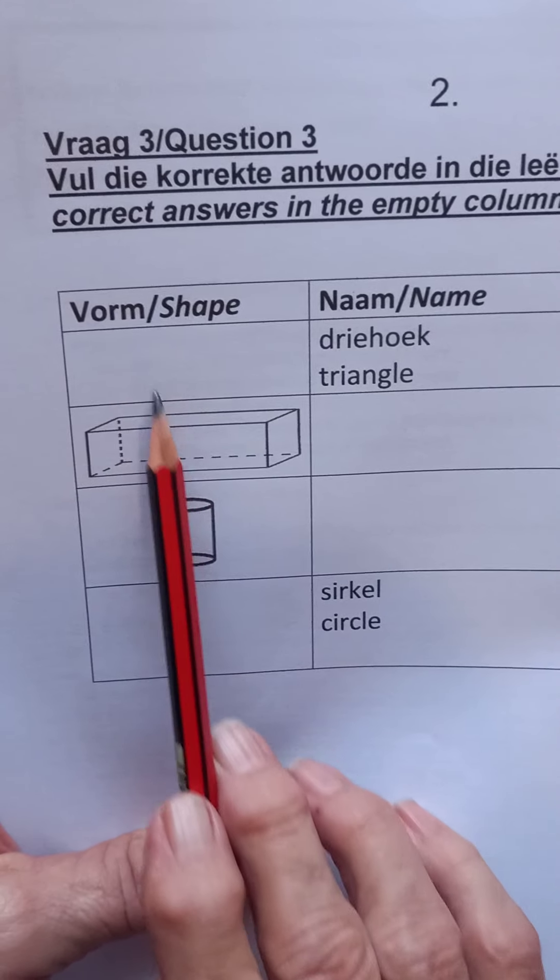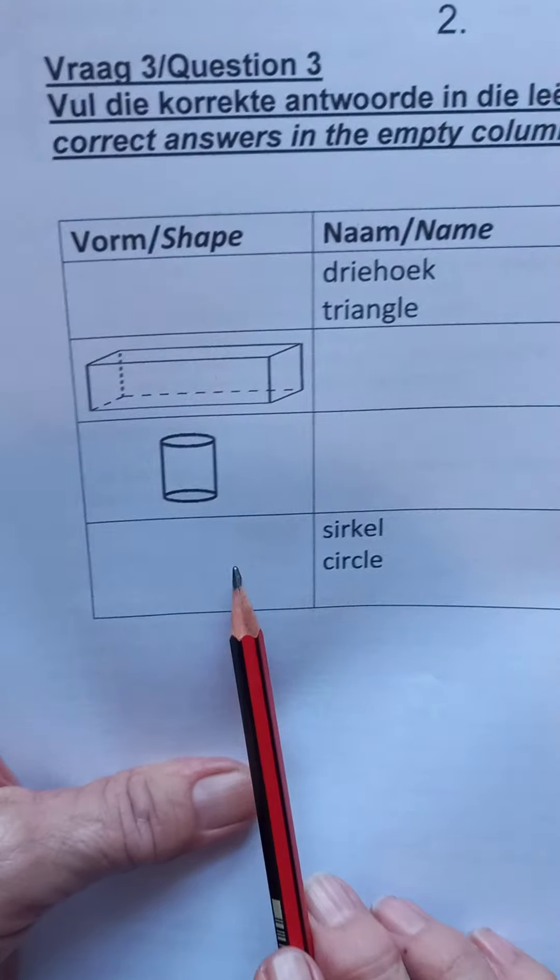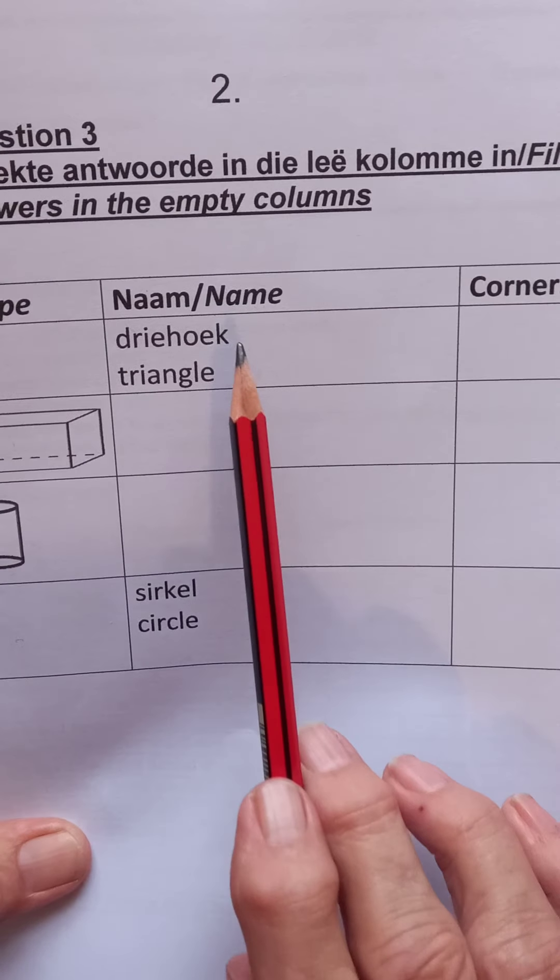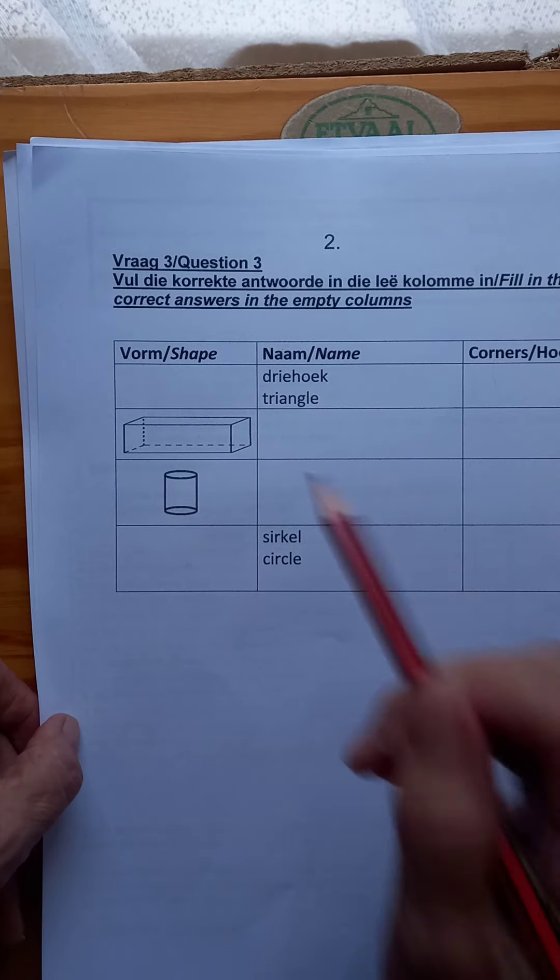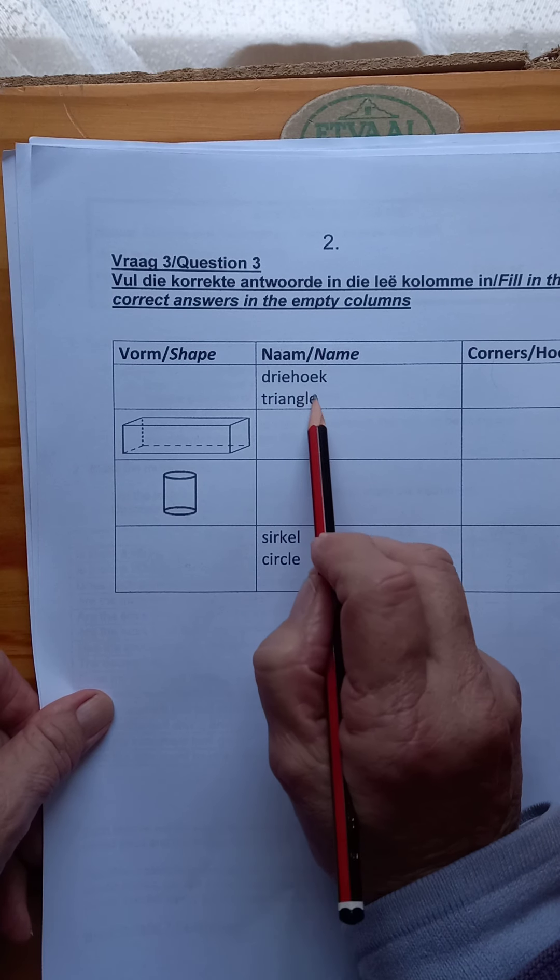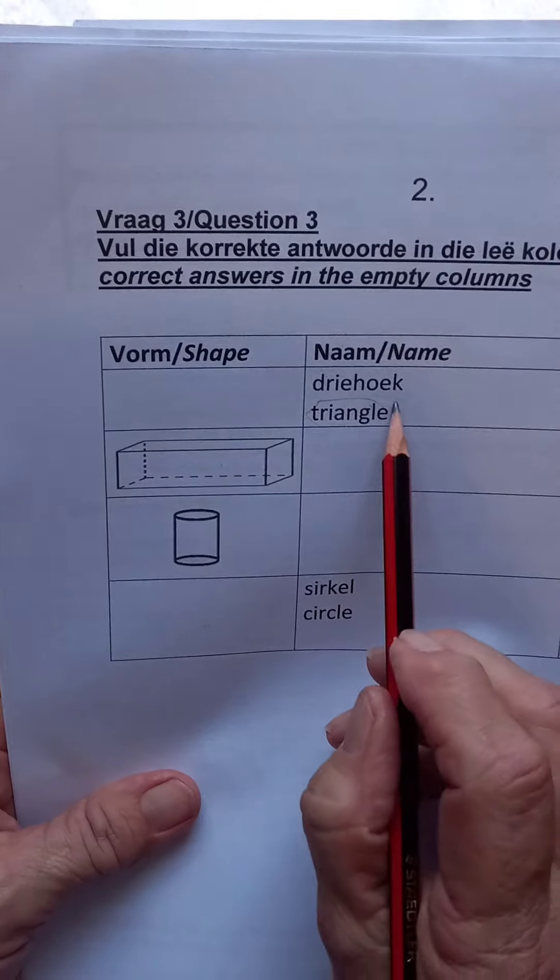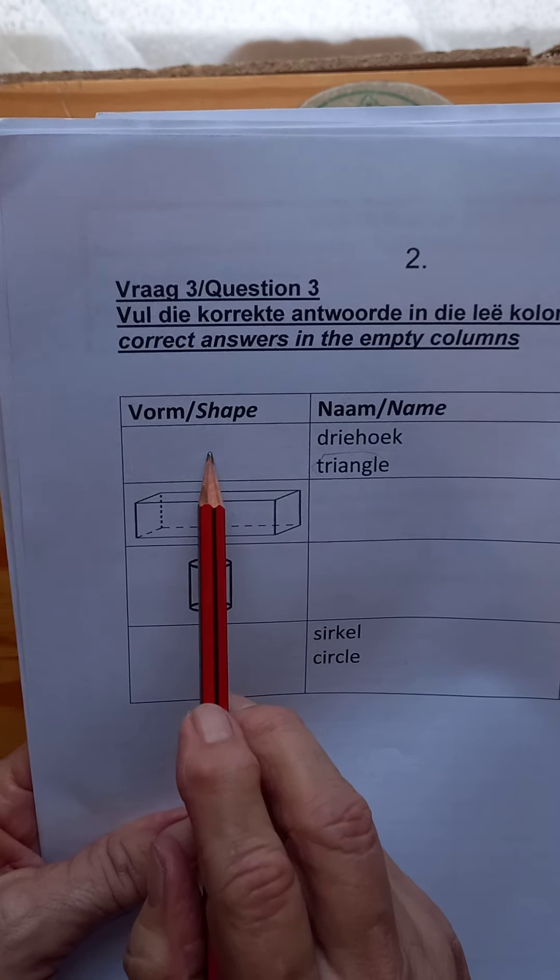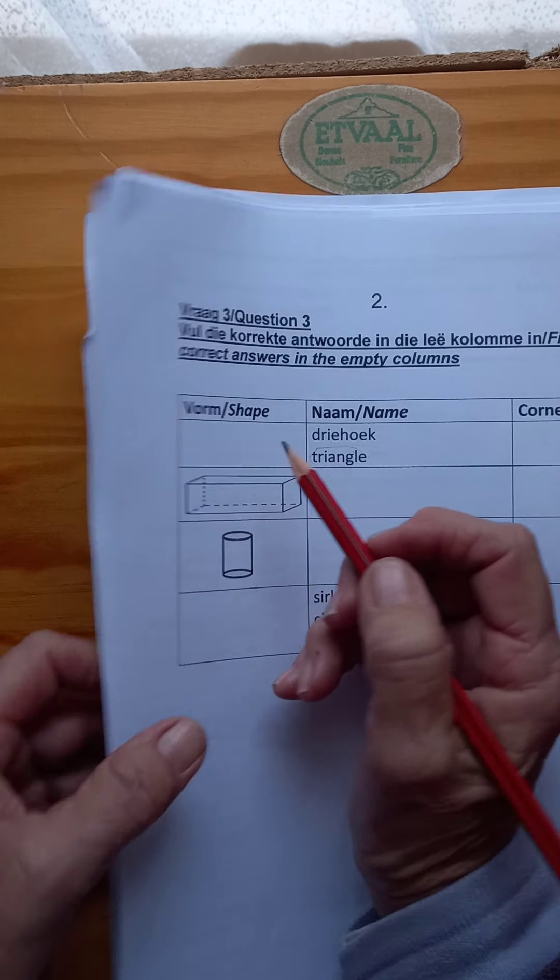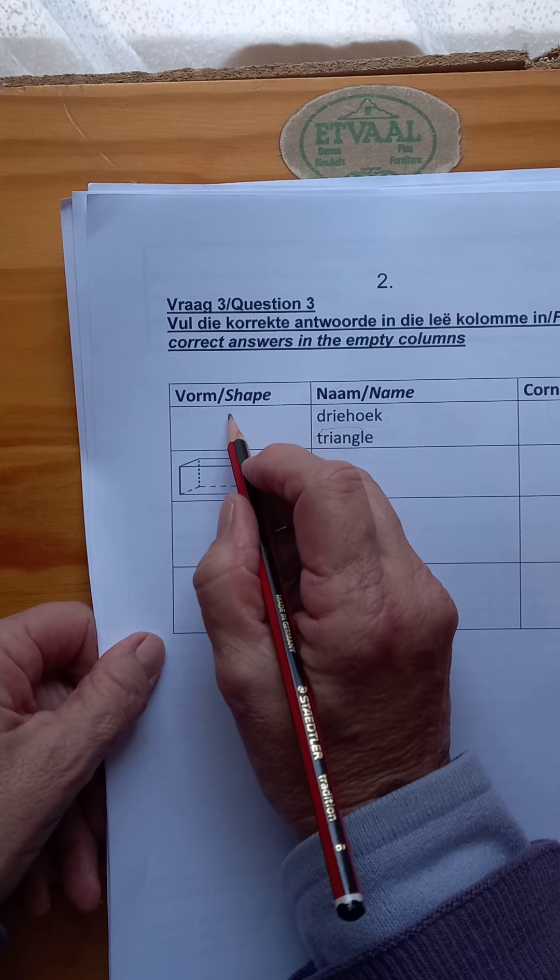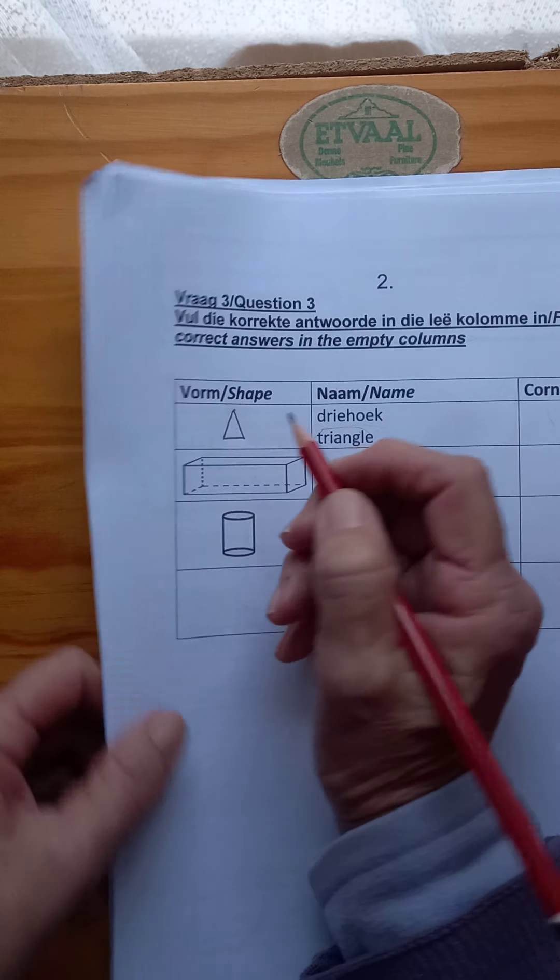Here is the column where the shape must be, here is the column where the name of the shape must be, and there is the column where the corners, the number of corners, must be written. If you look here, the name is already here, triangle, but there is no triangle.